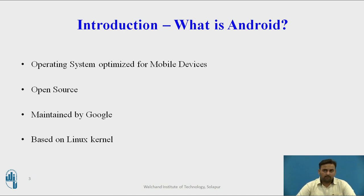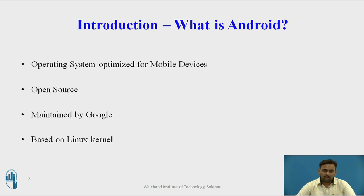The operating system is required to understand the user's action and perform the particular related operation on the system. Windows and Linux are some operating systems for the desktop zone, but for mobile devices, these are not suitable. So it is the requirement of the era that we need to introduce a new operating system for mobile devices — that is Android, which is an open source operating system used for mobile devices.